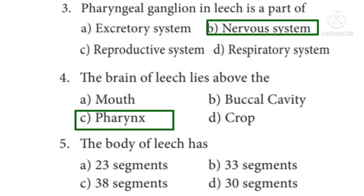Question 5: The body of leech has — Options: A. 23 segments, B. 33 segments, C. 38 segments, D. 30 segments. The correct answer is Option B: 33 segments.